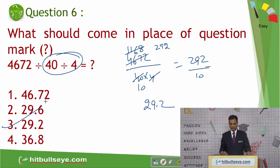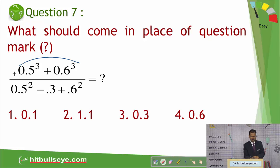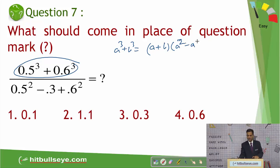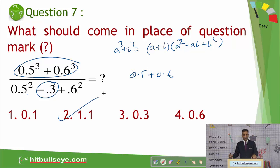Next is a simple algebra question. If you know the formula a³ + b³ = (a + b)(a² − ab + b²), you can solve it mentally. In the numerator it is a³ + b³, and in the denominator it is a² − ab + b², so the denominator cancels. The answer is a + b = 0.5 + 0.6 = 1.1. This is simply an application of the a³ + b³ formula.